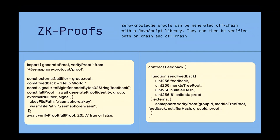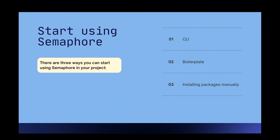There are three ways that you can use Semaphore. We have a CLI, a boilerplate, and you can also install the packages manually. If you want to create a project from scratch, you could use the CLI or fork the boilerplate, but if you prefer to integrate it directly into an existing project, you can use the packages.